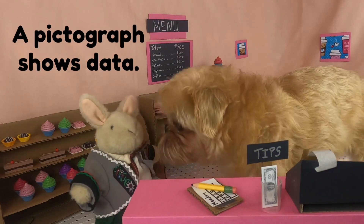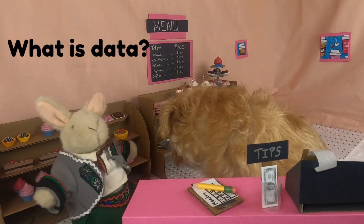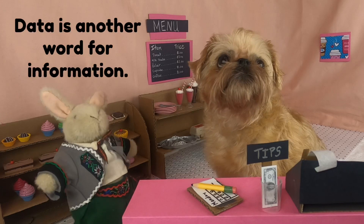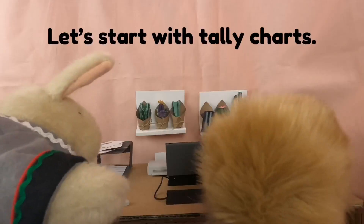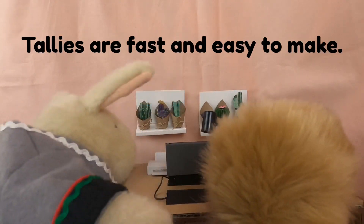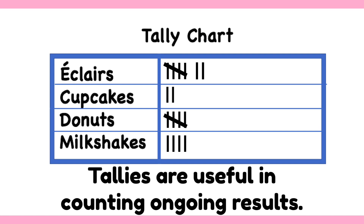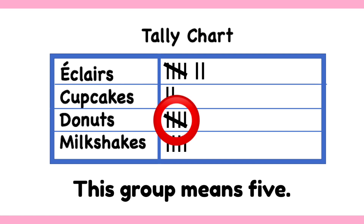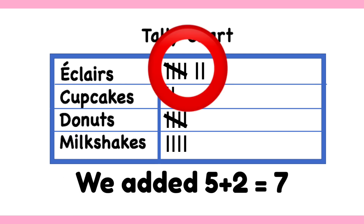What's a pictograph? A pictograph shows data. What's data? Data is another word for information. Let's start with tally charts. Tallies are fast and easy to make. Tallies are useful in counting ongoing results. This group means five. This group means seven — we added five plus two equals seven.